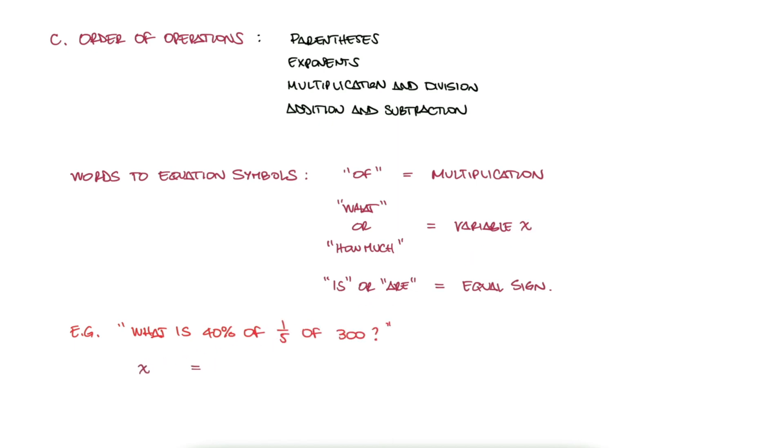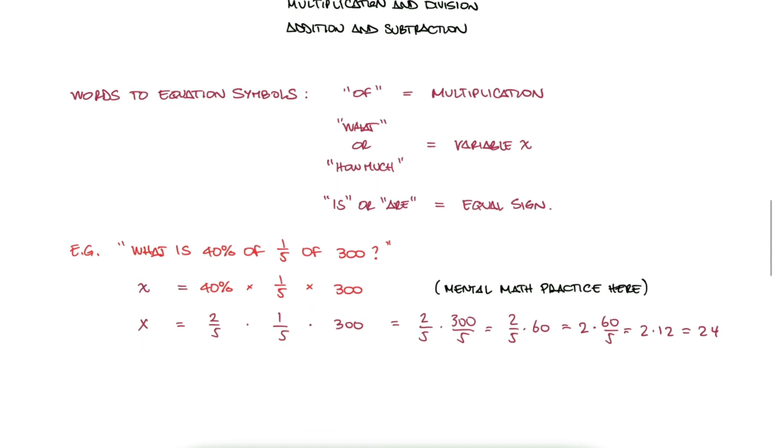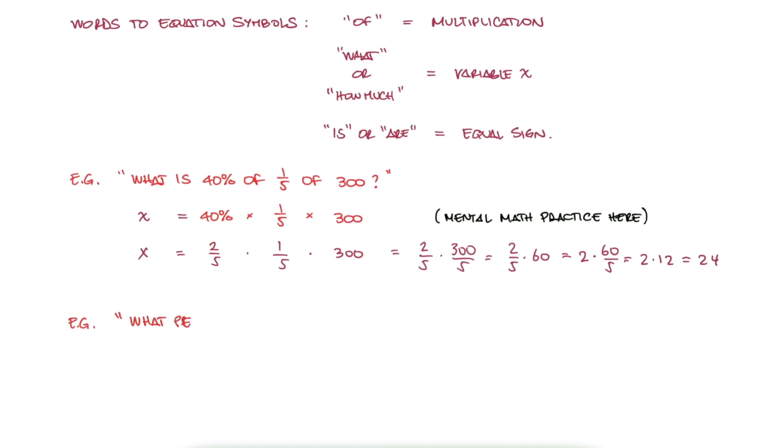So for a simple problem like 'what is 40% of one-fifth of 300', we write x equals 40% times one-fifth times 300. In this case, we would just multiply the fractions knowing that 40% is two-fifths. And similarly, in a less straightforward problem, we could be asked 'what percentage of 84 is 21'. Here we would write x percent times 84 equals 21, and then we would solve for x.